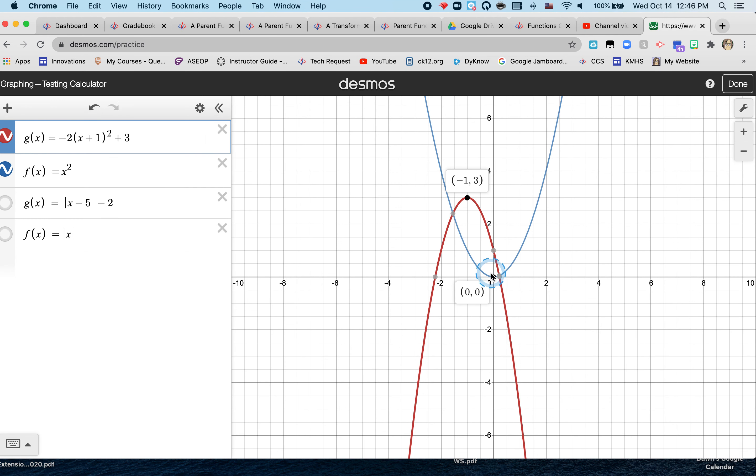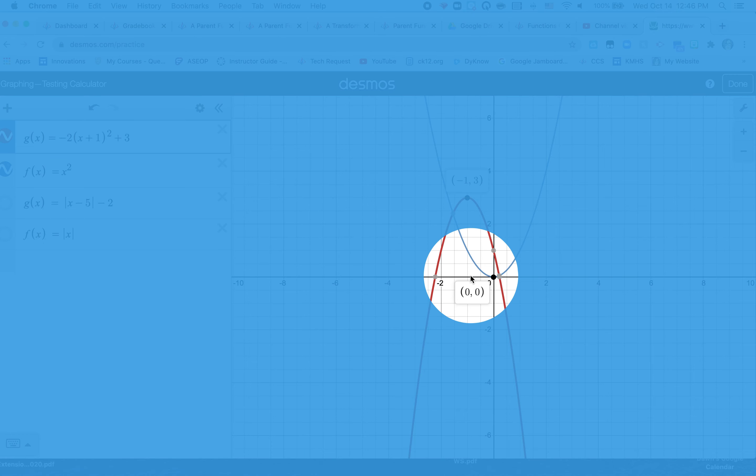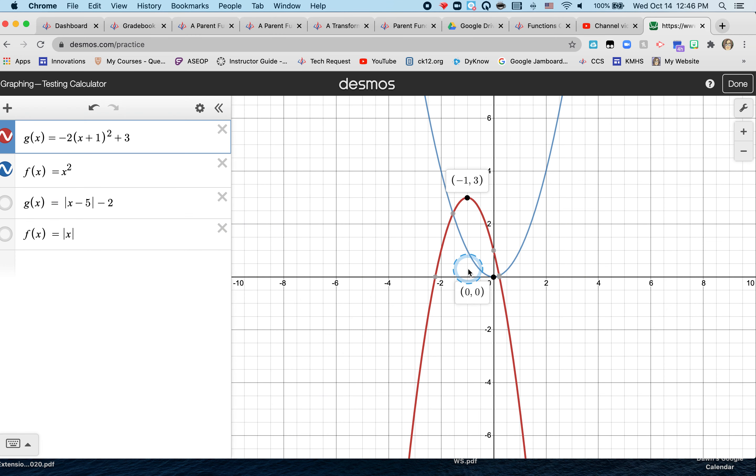the graph is actually moving to the left. Plus 1 in that x plus 1 squared moves it to the left. So if I were to identify it, I would say the g(x) moves to the left one unit.